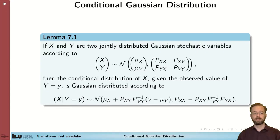So what does lemma 7.1 state? It states that if X and Y are two jointly distributed Gaussian variables according to this joint distribution,